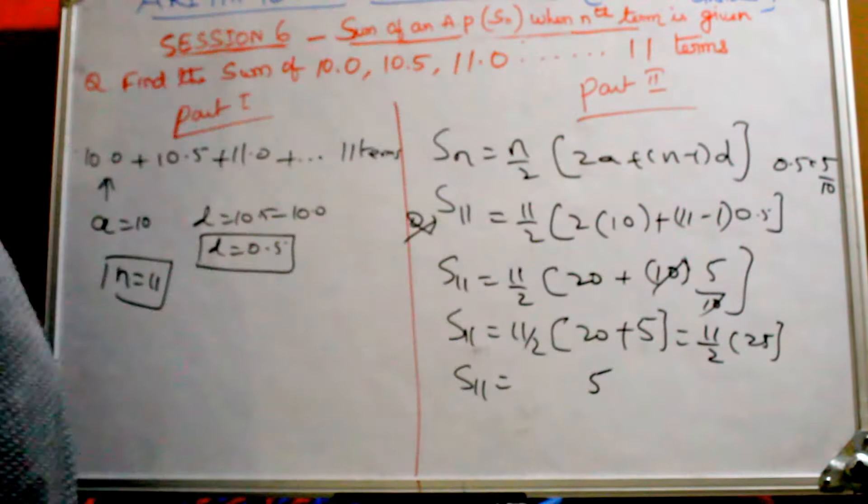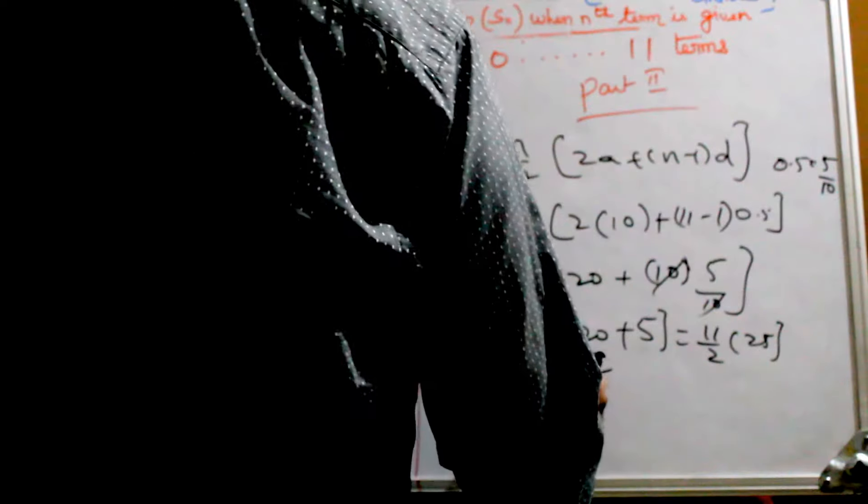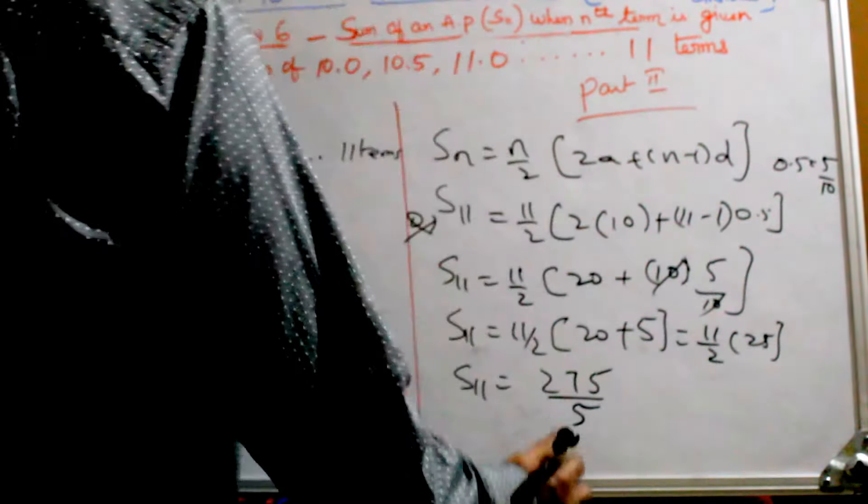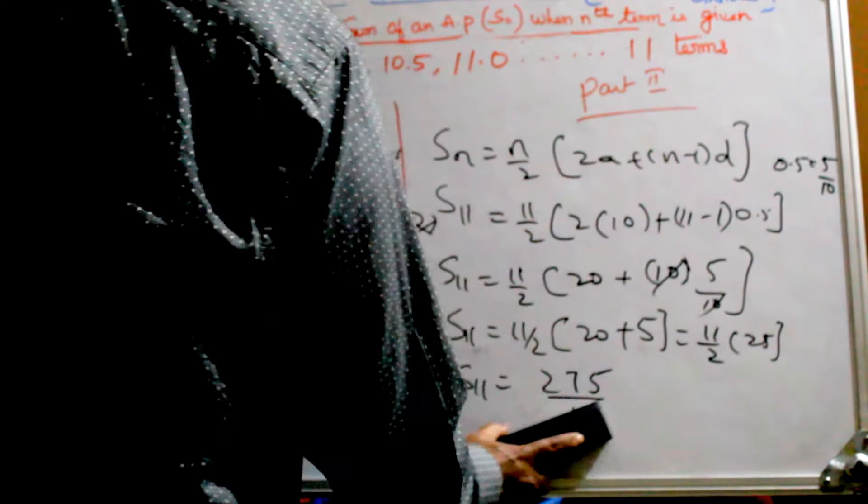S11 equals 11 times 25 over 2, which is 275/2. So 275/2 is the answer.